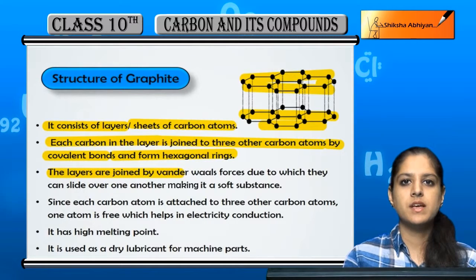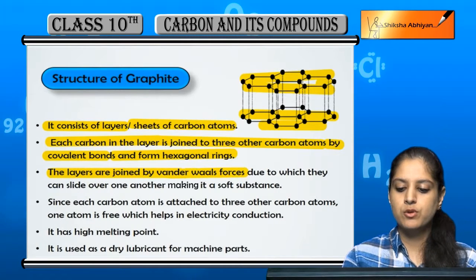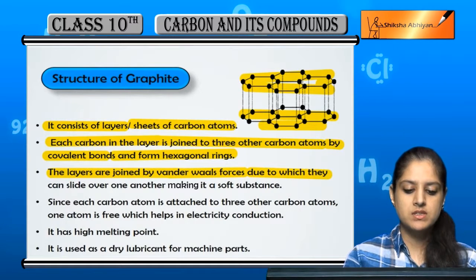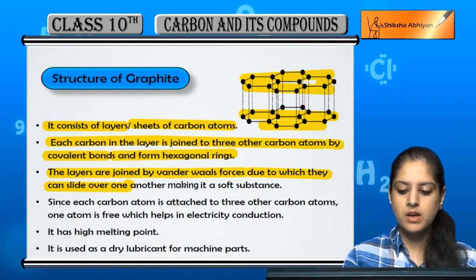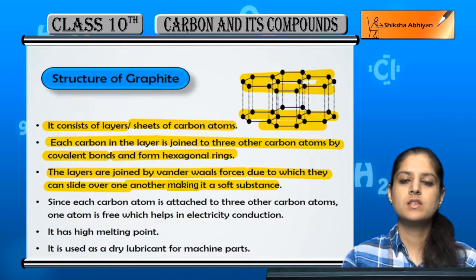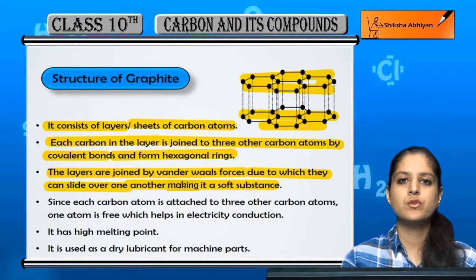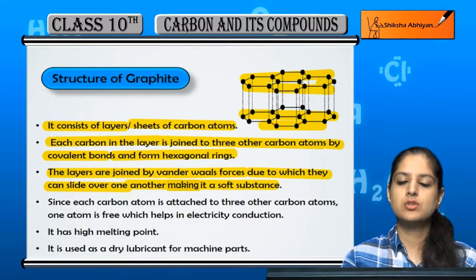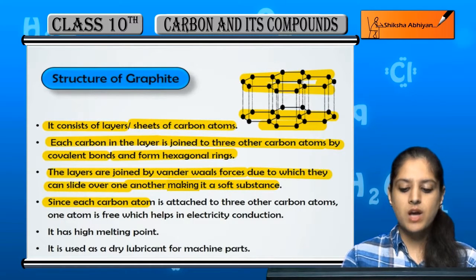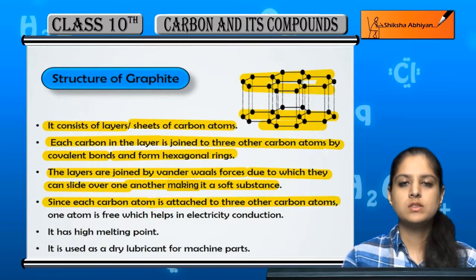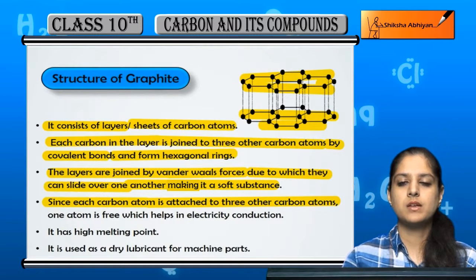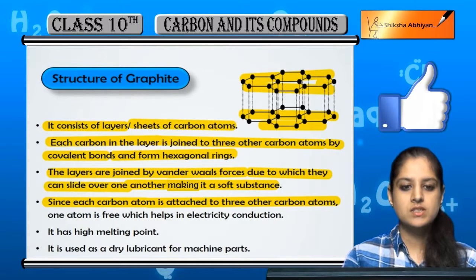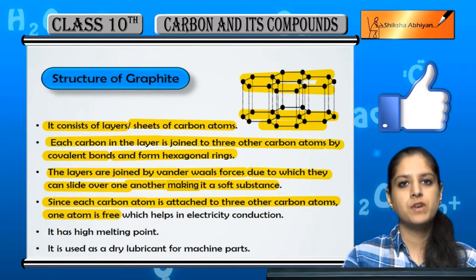These layers are joined to each other by van der Waals forces. Because of this, the layers can slide over one another, and graphite is soft, since van der Waals forces are not strong. Since each carbon atom is attached to only three other carbon atoms, one electron per carbon atom remains free.